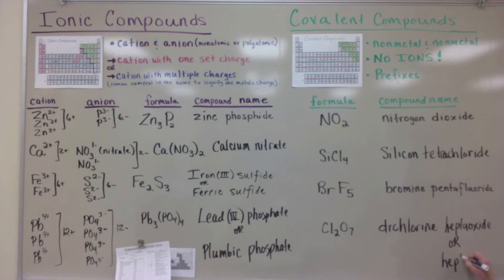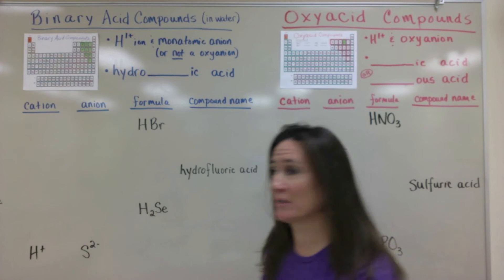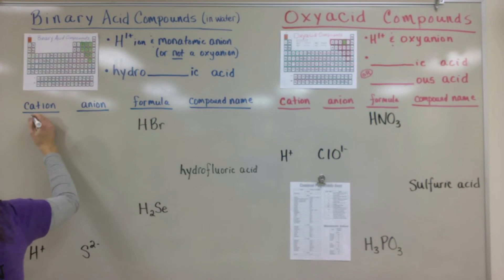Chemists may get rid of the vowel A and just say heptoxide. I'm going to go through four examples of binary and oxyacids.